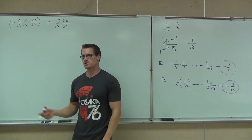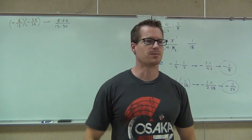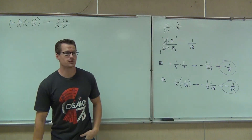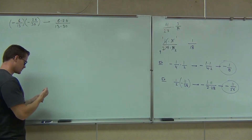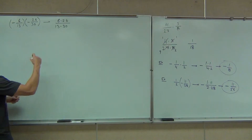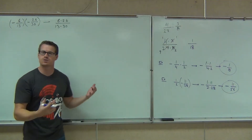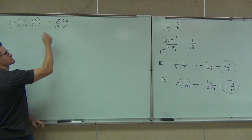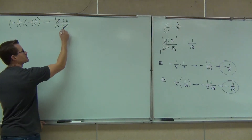Now we just have to simplify this thing. We're writing this as one fraction. Can you see any numbers that divide the number on the top and the bottom? 6 and 30 — what number divides both those things? 6. So we're going for the biggest. We'll divide both 6 and 30 by 6. 6 divided by 6 gives us 1, and 30 divided by 6 is 5.